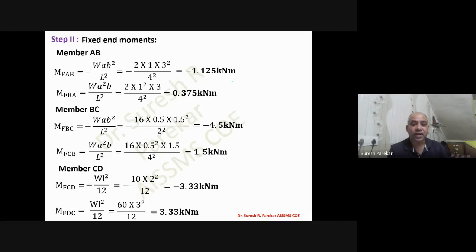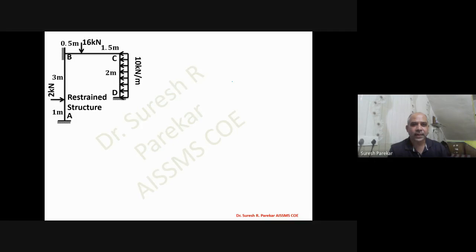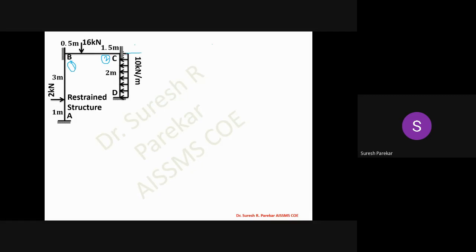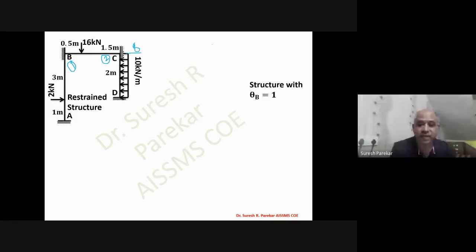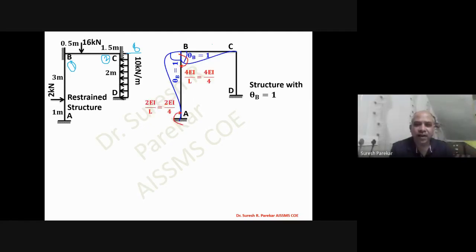Restraint structure: joints B and C are restrained (made fixed). Unknown 1 is θB, unknown 2 is θC, unknown 3 is Δ. FDL1 = MF_BA + MF_BC; FDL2 = MF_CB + MF_CD; FDL3 is the horizontal reaction at C.